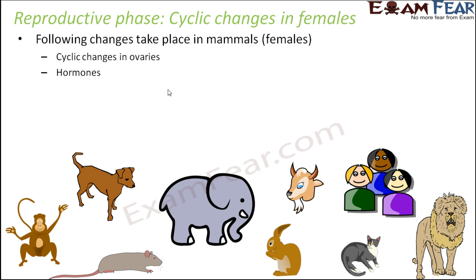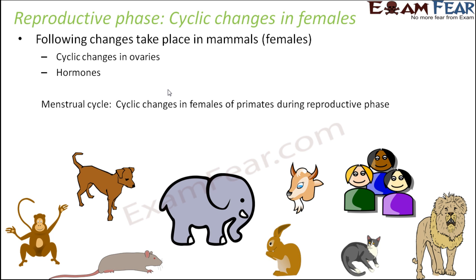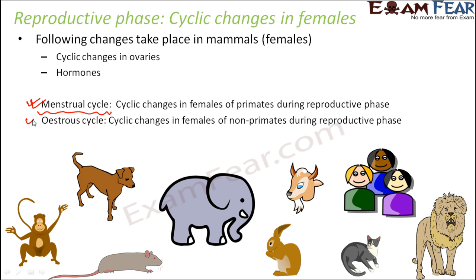Other organisms exhibit these cycles throughout the year irrespective of favorable or unfavorable conditions — such animals are continuous breeders. These cyclic changes in females during the reproductive phase are known as the menstrual cycle, and the process is called menstruation. We will not go into the detail of menstrual cycle right now; it will be covered in a later chapter. The same cycle has a different name in non-primates: it is called the estrus cycle, related to the hormone estrogen. So it is called the estrus cycle in non-primates and the menstrual cycle in primates — such as human beings and monkeys. The estrus cycle is seen in animals like cats, dogs, elephants, and rabbits. This cycle is specific to females and does not happen in males.